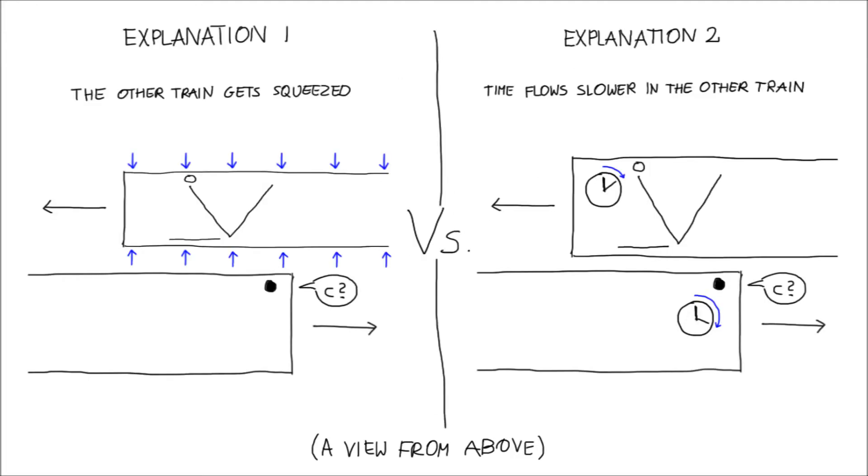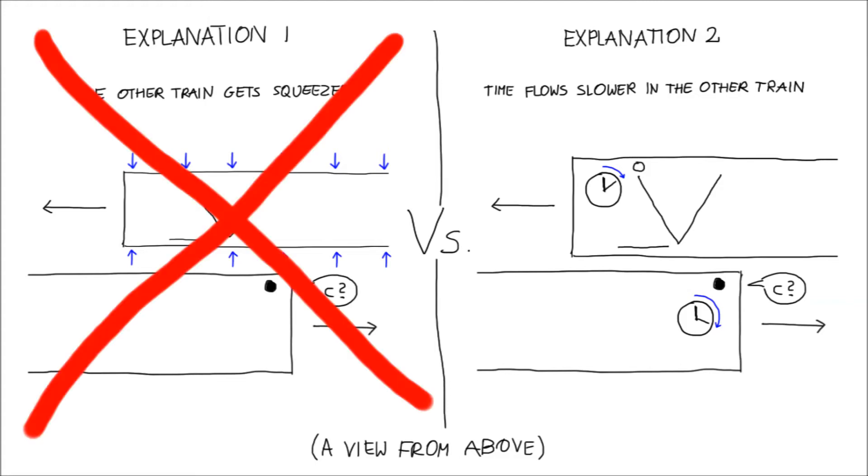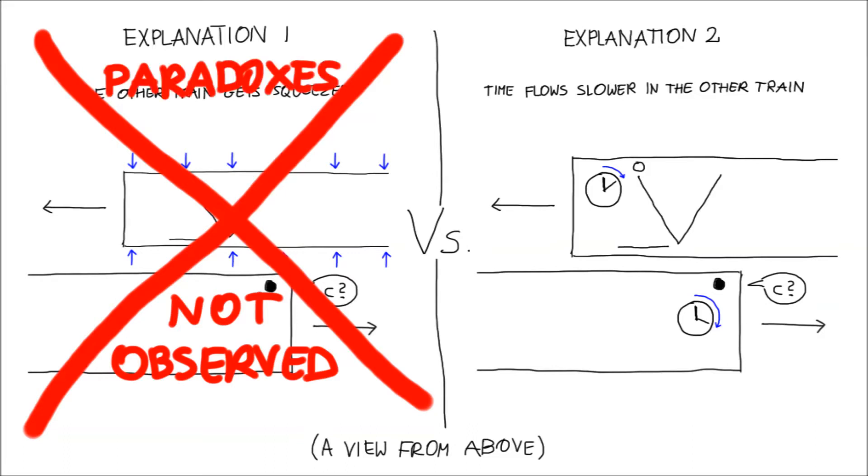So, which of these two explanations is correct? For many reasons, the first one is wrong. First of all, physicists do not observe that the space gets squeezed in this way. But it can also be rejected because it leads to many paradoxes.